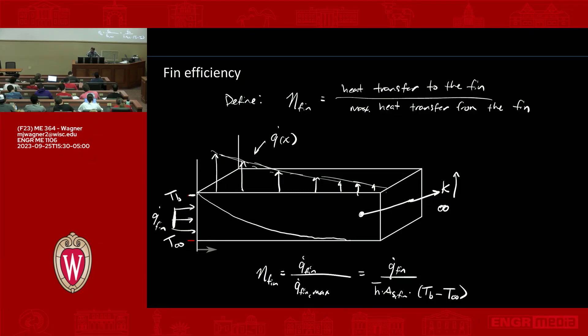So we can write this like eta fin is equal to q.fin divided by q.fin comma max, which is equal to q.fin divided by h bar times AS fin times TB minus T infinity. So a few things. I guess if we assume adiabatic tip here, then AS fin is equal to the perimeter times L, where this distance here is L. If you do not have an adiabatic tip, then you have to include the tip area as well. For the problem you're doing on homework, it's not just h bar. It's also radiation. So you have to account for both of them.